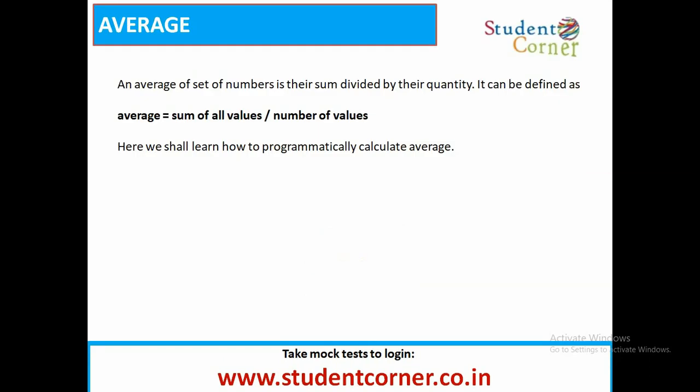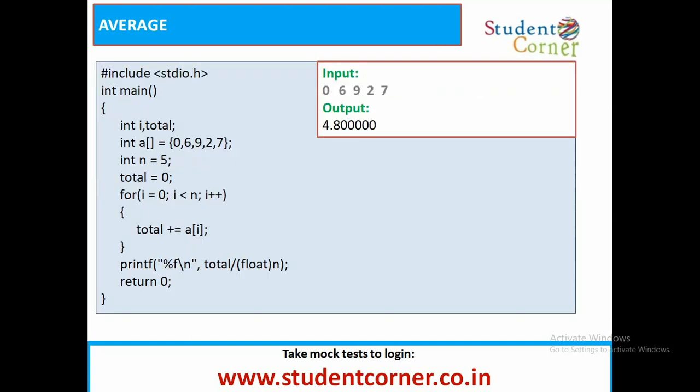Average - average is equal to sum of all values divided by number of values. The average of a set of numbers is their sum divided by their quantity. So, come to the program.